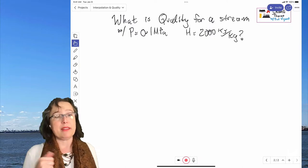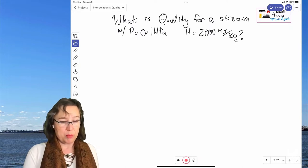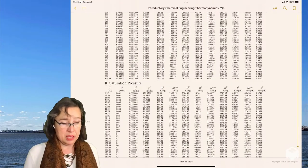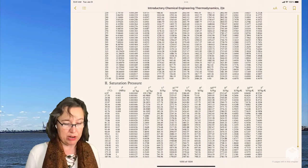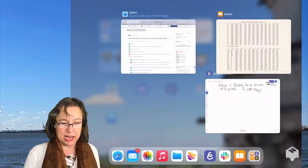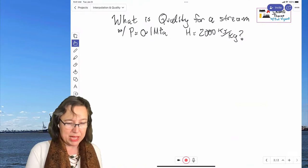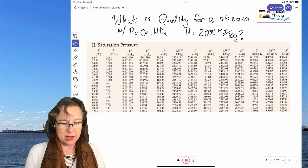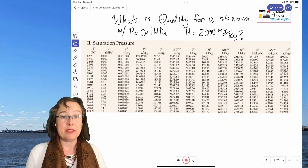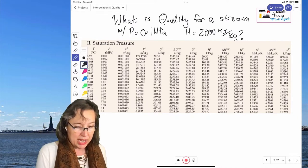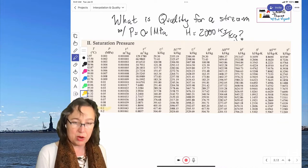So again, we're going to look at the steam table from our textbook. And this time, because we know a pressure, we're going to look under saturation pressure. And so that's the line we're going to look for. And again, I'm going to copy and paste that into my document here, so I can write on it more easily and we can examine it more closely.